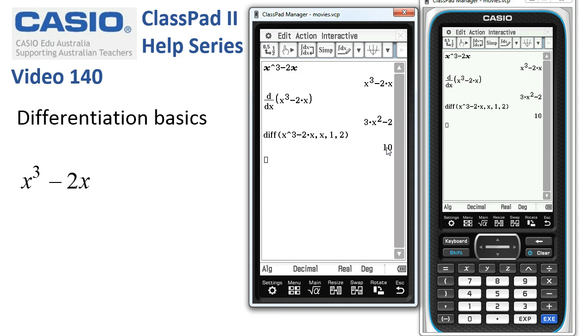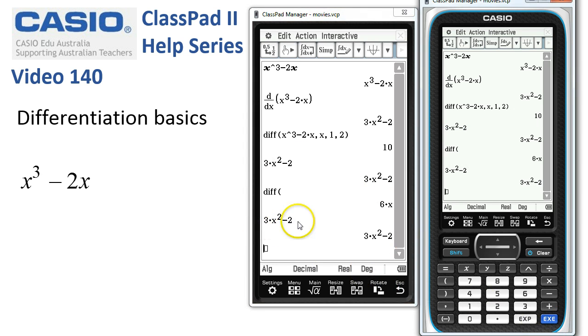There are a few shortcuts. If you simply type in the function, press execute, then there's the action calculate diff and tap execute again. Another way of doing it is to take a copy of the expression, press execute. We literally type it in and press execute.